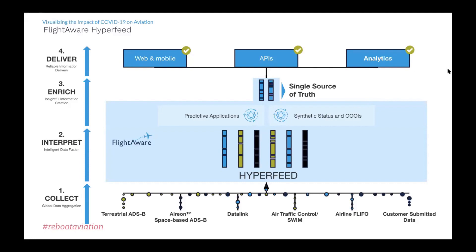So how does FlightAware capture and provide this aviation data to some of the world's leading airlines and companies? The bottom part of this slide depicts how FlightAware captures many different data sets. We have ADS-B, data link messages, schedules data, flight plans, ATC and SWIM messages, plus some customer-supplied data.